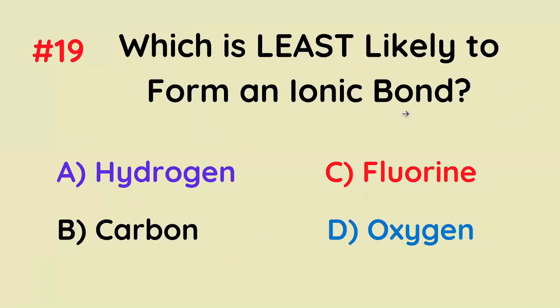Which of these is least likely to form an ionic bond? The correct answer is carbon, largely because it's in group four.